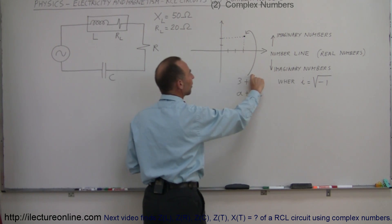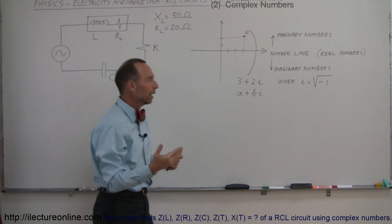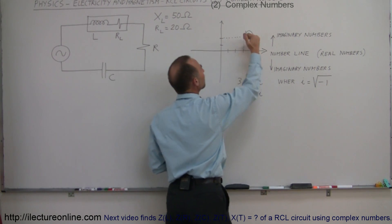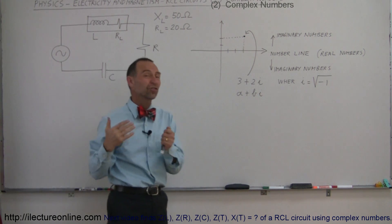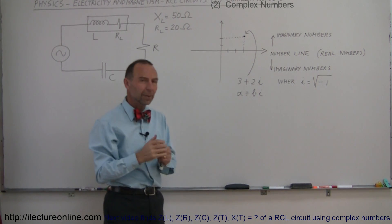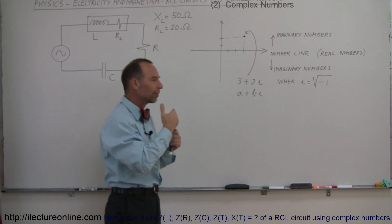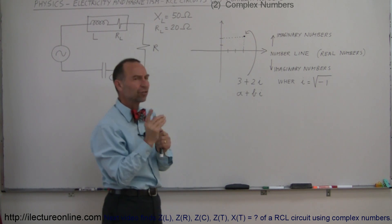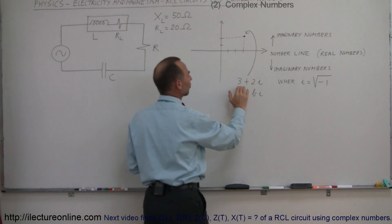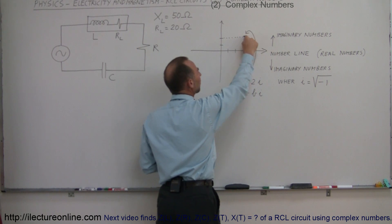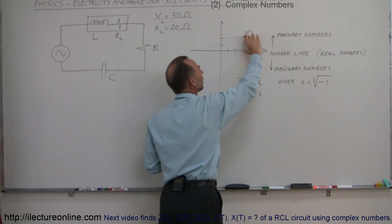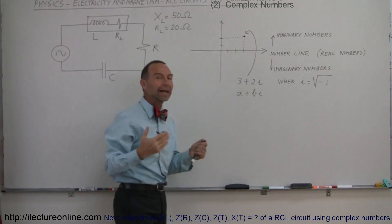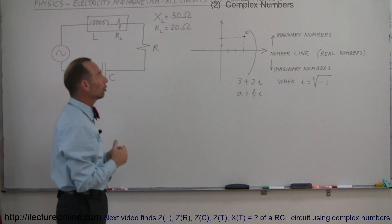and has an imaginary part equal to 2i. Now, i is the square root of negative 1, which makes it an imaginary number, because there's really no such thing as the square root of negative 1. But it's a really handy tool to help us write a complex number — something with an imaginary part. So we can write this as 3 plus 2i. That number is 2 units away from the number line, so the imaginary part has a magnitude of 2 units.